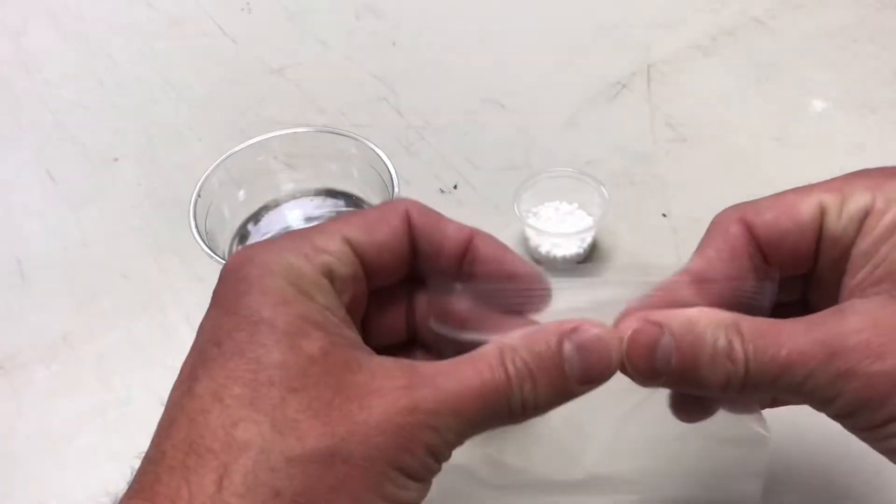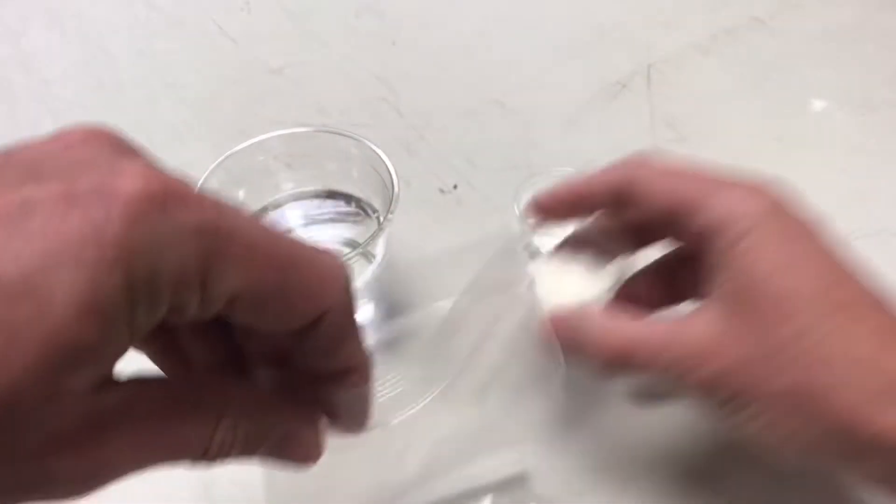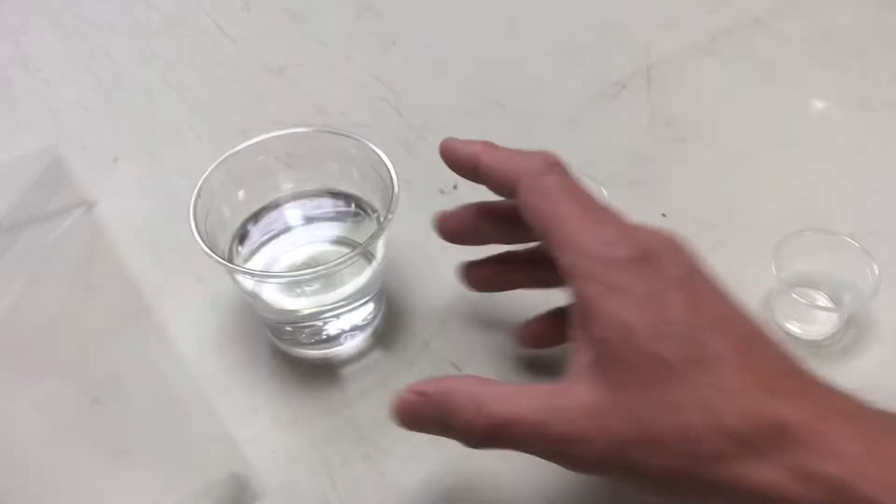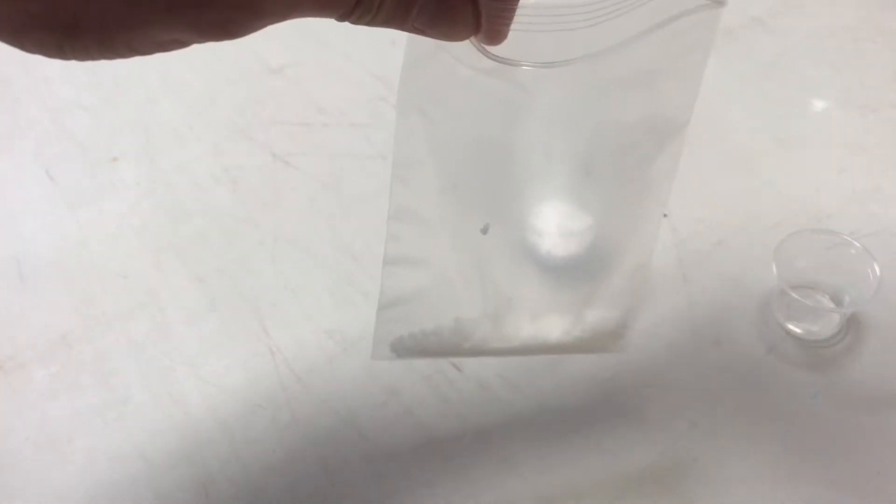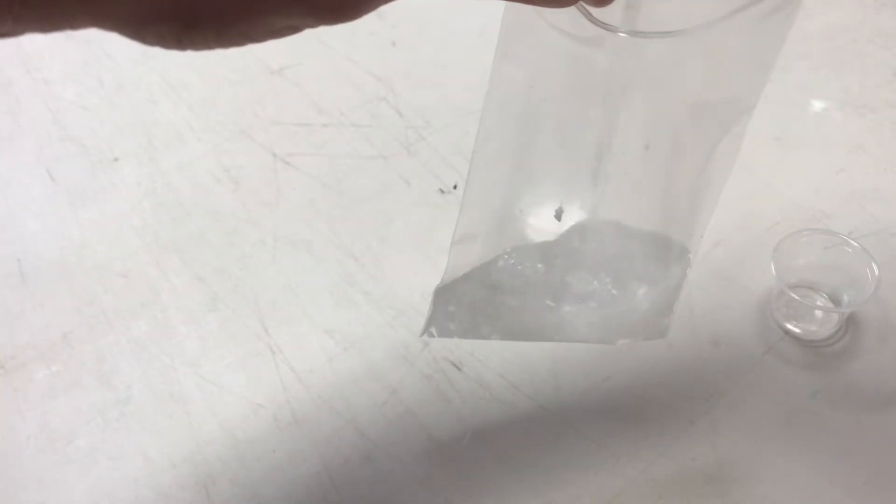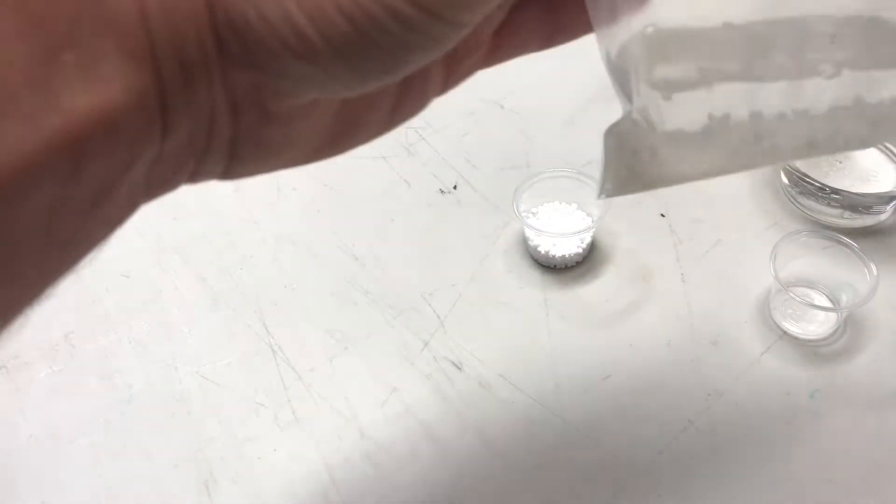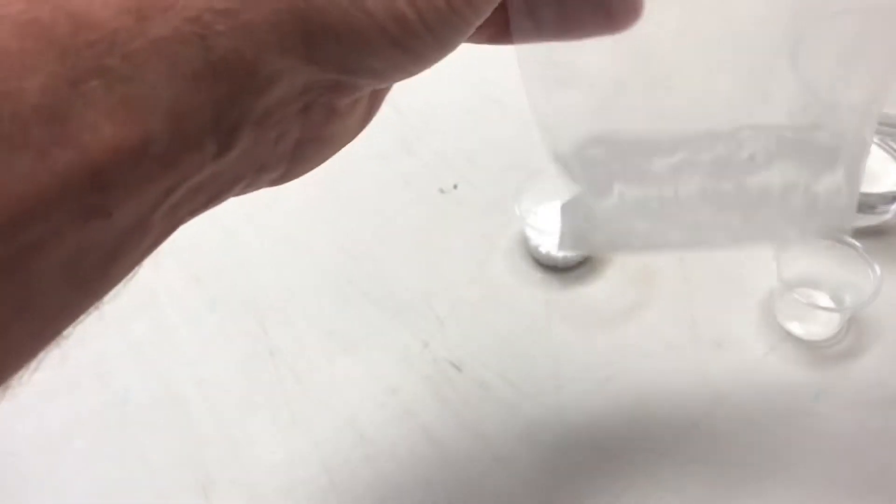So to get started, I'm just going to put about a tablespoon of super absorbent crystals in there. I'm going to add just enough water, maybe about a quarter cup. Basically just enough water for our crystals to absorb. We're going to let those soak.